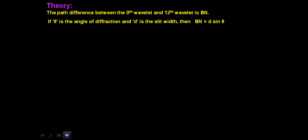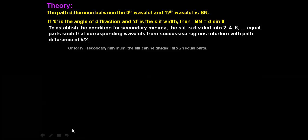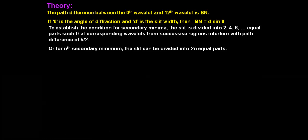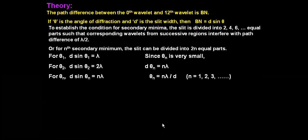If theta is the angle of diffraction and d is the slit width, BN equals d sin theta. To establish the condition for secondary minima, the slit width is divided into 2, 4, 6 equal parts — even multiples — such that corresponding wavelets from successive regions interfere with path difference of lambda by 2. For theta 1: d sin theta 1 equals lambda. For theta 2: d sin theta 2 equals 2 lambda. For theta n: d sin theta n equals n lambda. Since theta n is very small, we can write d theta n equals n lambda, and theta n equals n lambda by d.